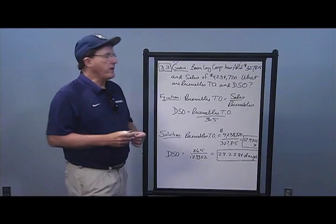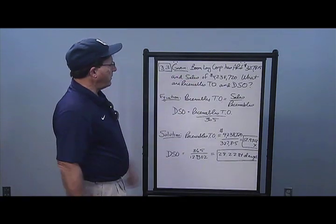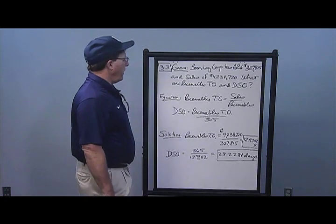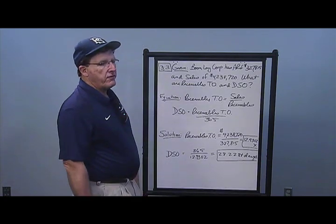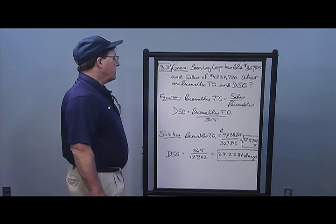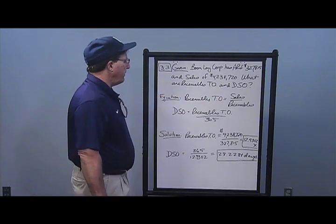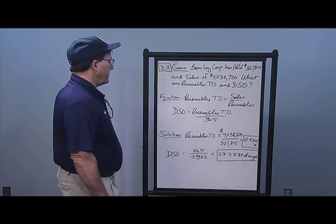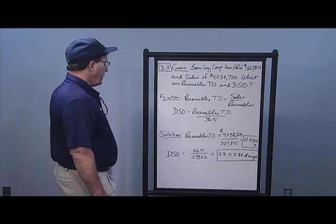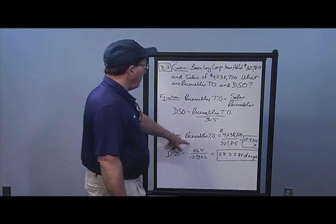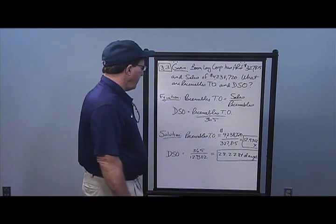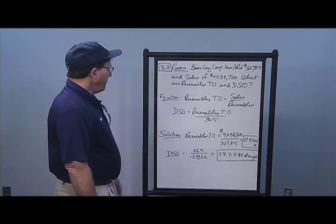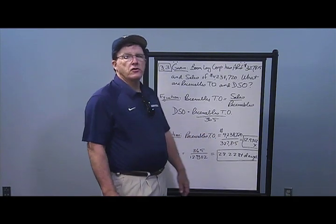In Problem 3.3, Boomley Corporation has accounts receivable of $327,815 and sales of $4,238,720. What are their receivables turnover and days sales outstanding? Receivables turnover is simply sales over receivables. I take sales of $4,238,720 divided by accounts receivable of $327,815 and get a receivables turnover of 12.9302 times.